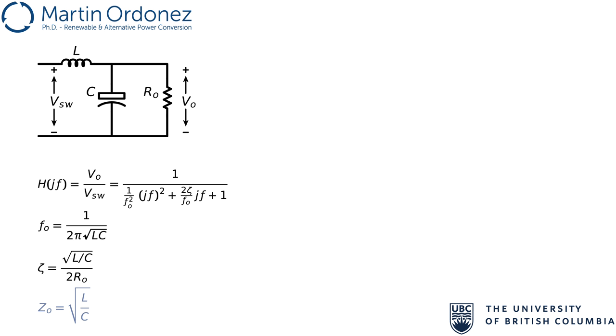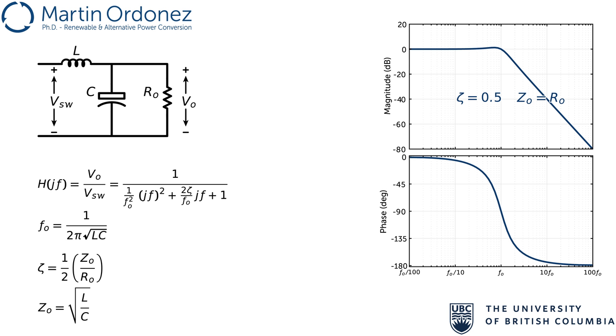We call the square root of L over C the characteristic impedance of the filter, Z0. This makes the damping factor 1 half of Z0 over R0. The Bode plot of the frequency response shows the typical characteristics of a second-order system, with a damping factor equal to 0.5, R0 equals to Z0. The inverter load, R0, will have an impact on the frequency response. Light loading conditions, higher R, will cause lower damping, causing the frequency response to have a large peak close to omega 0. Heavy loading conditions, lower R, will cause the frequency response to have a lower peak, and even become two real poles.